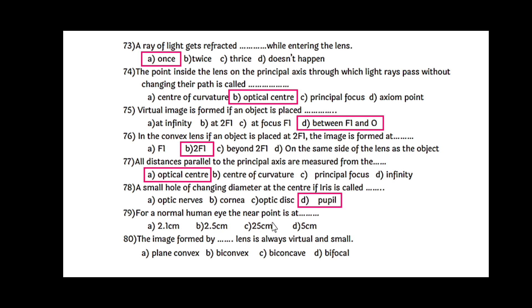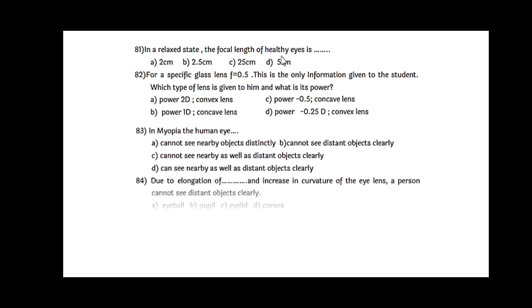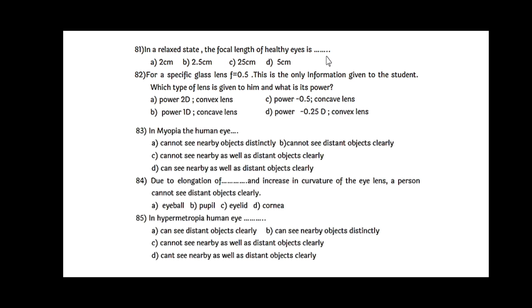A small hole of changing diameter at the center of iris is called the pupil. For a normal human eye, the near point is at 25 cm. Next, the image formed by concave lens is always virtual and small. In a relaxed state, the focal length of healthy eyes is 2 cm.